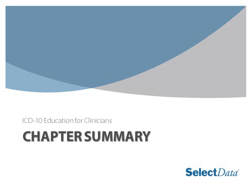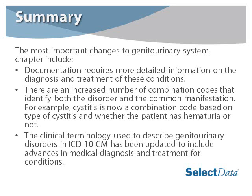Here is our chapter summary. The most important changes to the genitourinary system chapter include: documentation requires more detailed information on the diagnosis and treatment of these conditions; there are an increased number of combination codes that identify both the disorder and the common manifestation — for example, cystitis is now a combination code based on the type of cystitis and whether the patient has hematuria or not; and the clinical terminology used to describe genitourinary disorders in ICD-10 has been updated to include advances in medical diagnoses and treatment.